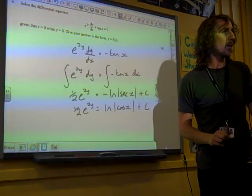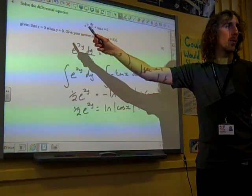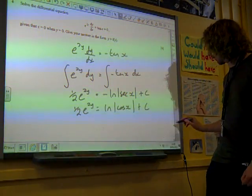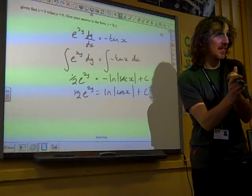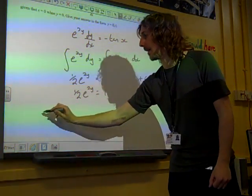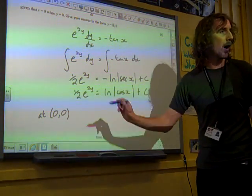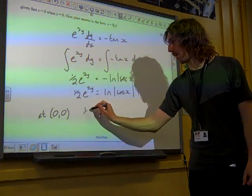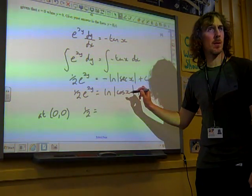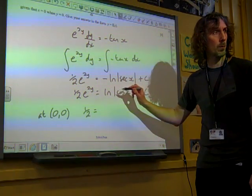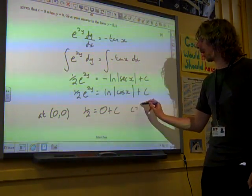Now, we do also know that when x is 0, y is 0. So that will allow us to find c, hopefully. Notice it doesn't just mean that c is 0. So at the point 0, 0, we've got half e to the 0, which is half times 1. It's natural log of cos 0. Well, cos 0 is 1. Natural log of 1 is 0. So c equals 1 half.